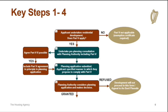Steps 1 to 4 take place prior to the grant of planning permission. The first step is to determine whether Part 5 applies to a development — further information is available in the 'What is Part 5?' video. If Part 5 applies, the applicant and the local authority undertake a pre-planning consultation which includes discussions about Part 5, and both parties should aim to agree Part 5 in principle if possible. Details of this agreement in principle should be submitted with the planning application.